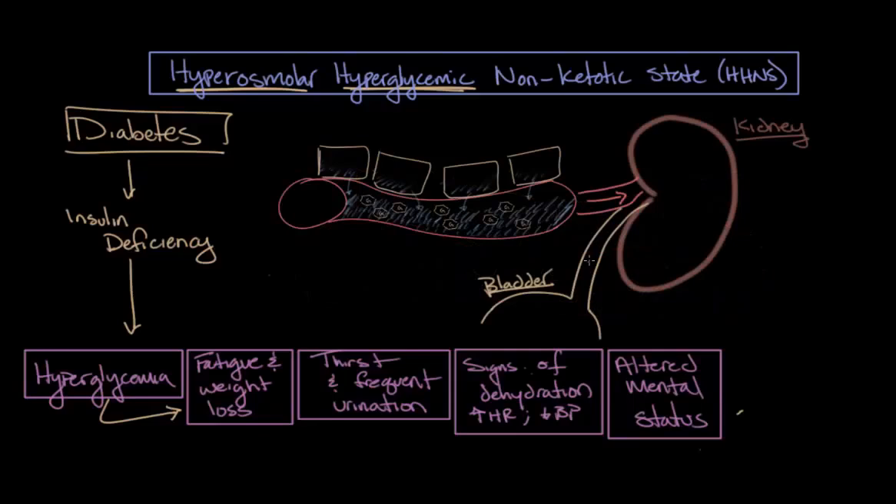Then, as this blood moves to the kidneys where it's filtered, under normal situations, the kidneys will filter out very little glucose. They reabsorb almost all of the glucose that's in the blood. However, at a certain point, the hyperglycemia becomes so severe that the kidneys are not able to reabsorb all of the glucose and it spills out into the urine.